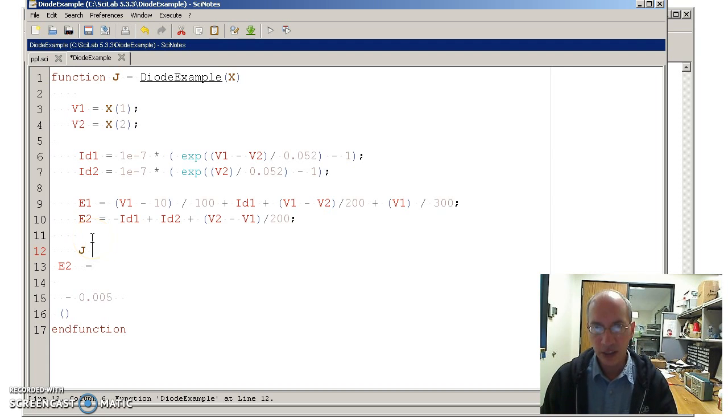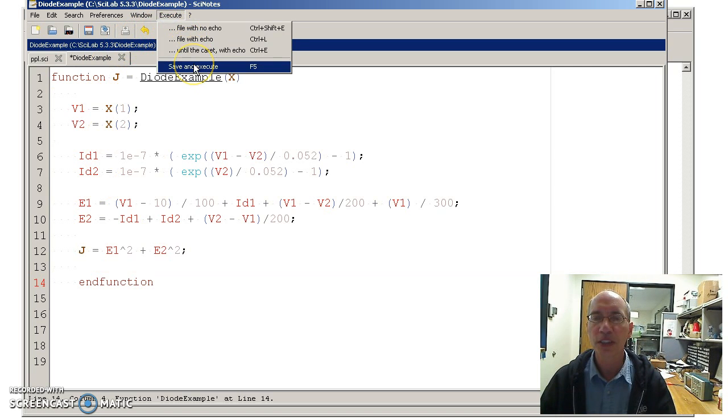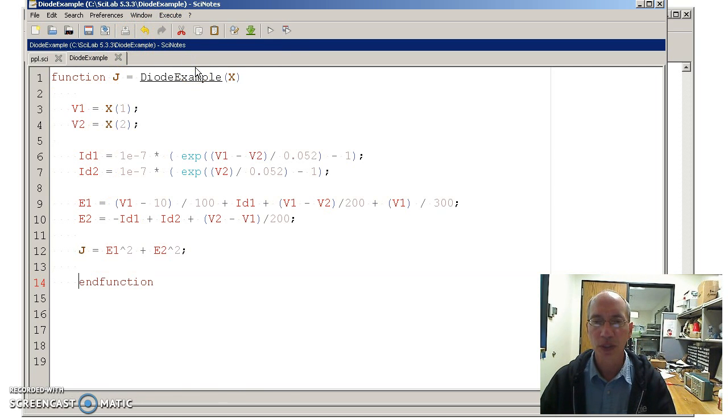And now I want to create a function, J, so that J is minimized when the error is zero. One way to do that is take the sum squared error. And you're done. Now to save this in Scilab, do execute, save, and execute. What that did is that just created a new function in Scilab, called diode example. Then go into Scilab.